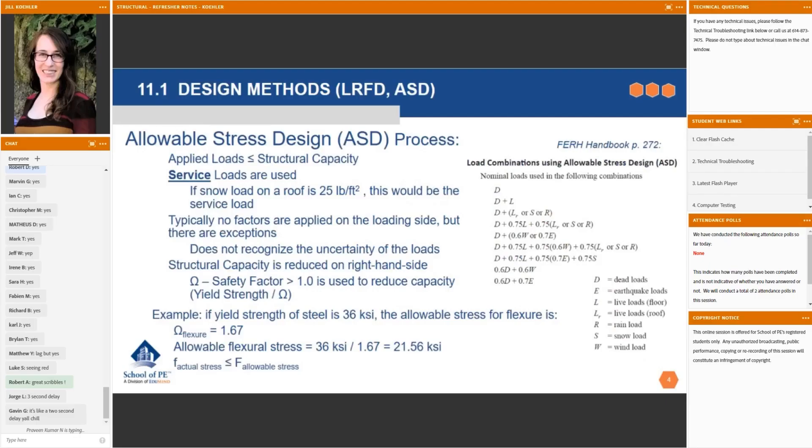All right, so ASD, the older specification. So what do we want? We want our capacity to be greater than our loads. That's kind of the whole idea behind structural engineering, right? That's what safety means. The capacity is going to be bigger than the loads. But what exactly does that mean for ASD? How do we build in safety factors into this?